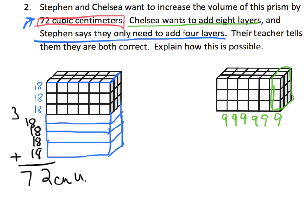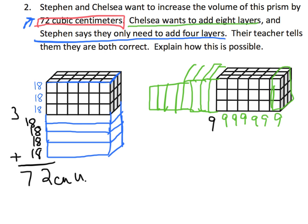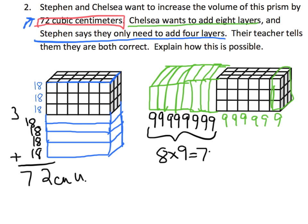If I want to add layers for Chelsea, we can see that there's nine here, nine here, nine here — so each slice is nine cubic units. If we want to do eight more layers: one more layer, that's nine; here's another layer; here's another layer; here's another layer — so that's four; five, six, seven, eight. You can see I've done eight layers of nine. Eight times nine is 72, so we've added 72 cubic units of volume with eight layers. They're both right: Stephen increased by 72 using four layers, and Chelsea increased by 72 using eight layers.